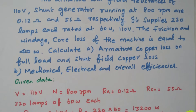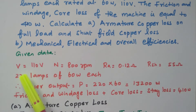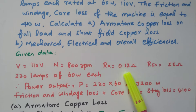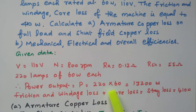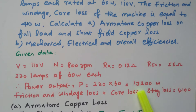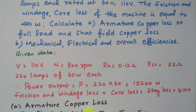Now we will see the data — what are the given values available. The voltage is given: 110 volts. The speed is 800 rpm. Armature resistance: 0.12 ohm. Shunt field resistance: 55 ohm. 220 lamps are available, each 60 watts. So the power output equals 220 × 60 = 13,200 watts. Friction and windage loss plus core loss — the stray loss — is equal to 410 watts.